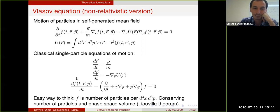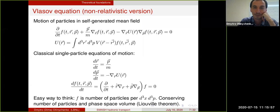Essentially it is writing that d(distribution function)/dt = 0. It assumes that there are no collisions — you just have particles interacting via potentials. For particles interacting via potential, you can conserve the number of particles and the phase space volume. This is Liouville's theorem, and the Vlasov equation is a clever way to write this down.